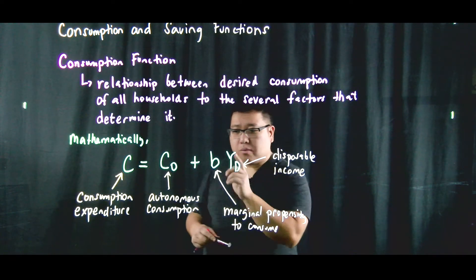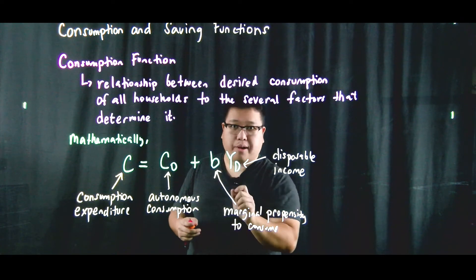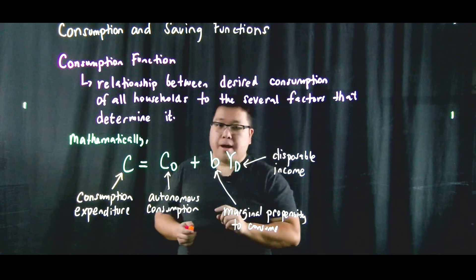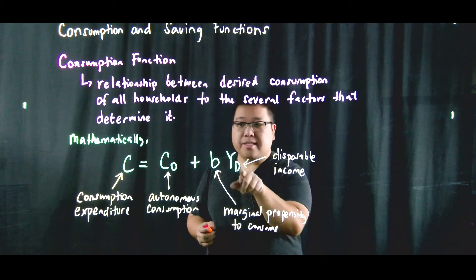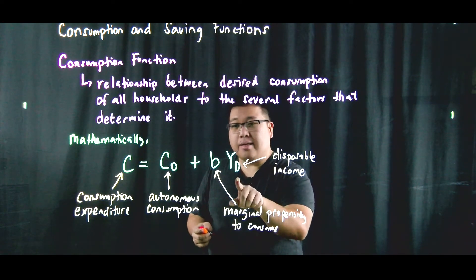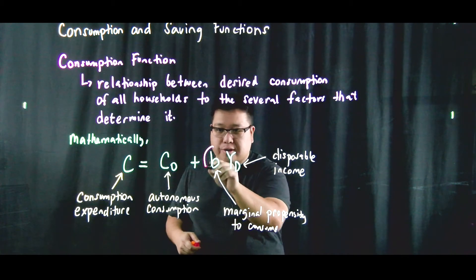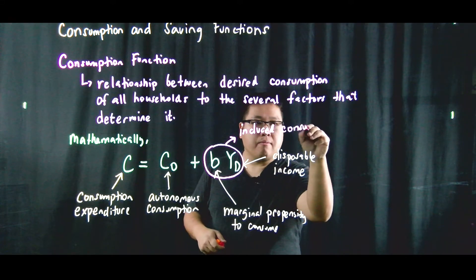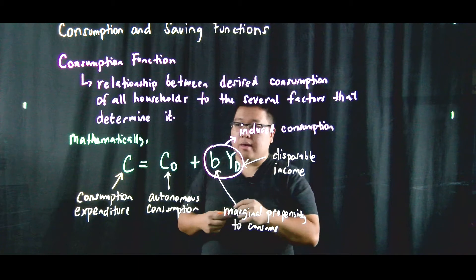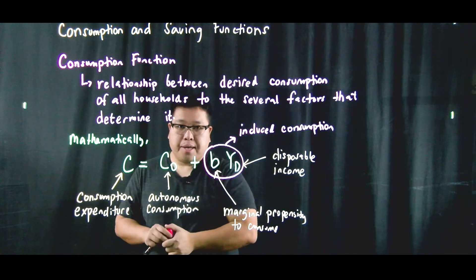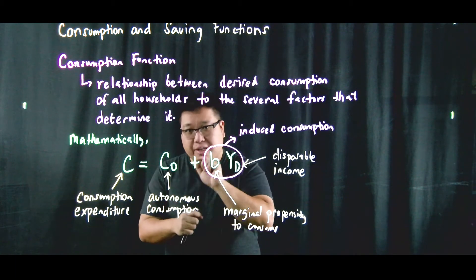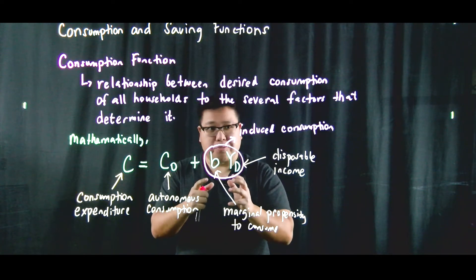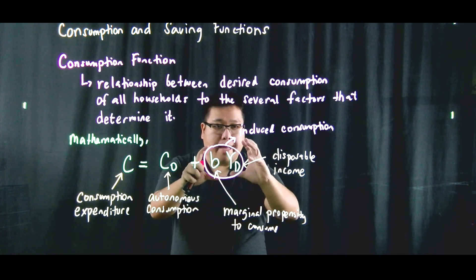Autonomous consumption is consumption that does not depend on disposable income. So even if your disposable income is zero, you still have this consumption that's autonomous. B times YD is the part of consumption that depends on disposable income — we call that induced consumption. So aggregate consumption expenditure can be decomposed into two: autonomous consumption and induced consumption.